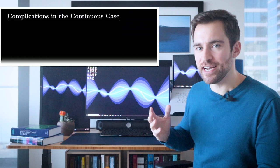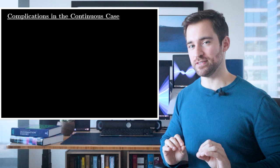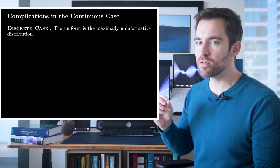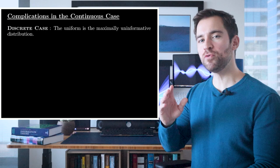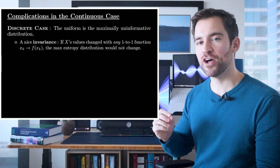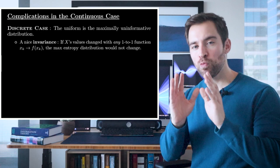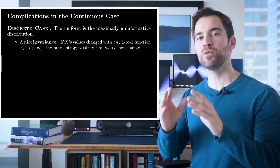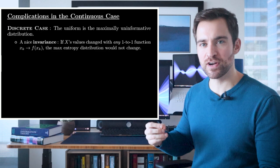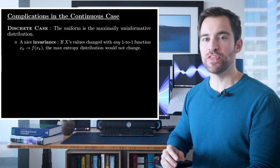We're going to witness some technical difficulties. Let's first talk about the discrete case. One nice thing about it is it's totally uncontroversial what the most uninformative distribution is. It's the uniform. One motivation is it enjoys a nice invariance. That is, if you mapped each unique value X can take to some other value and you carried out the procedure with these new values, it wouldn't change your max entropy distribution. For example, in our digits example, if we were using 10 letters instead of 10 digits, we would get the same answer.